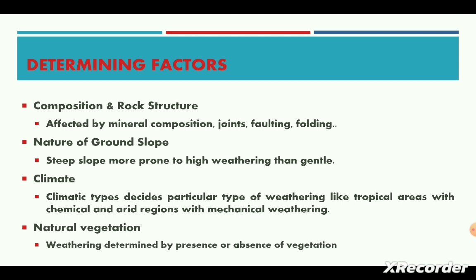The fourth major determining factor of weathering is the floral effect or natural vegetation. The nature of weathering is also determined by the presence or absence of vegetation in a particular region. Vegetation is partly a factor of weathering and at the same time a protector of rocks. In regions with high vegetation, rocks are bound through the network of tree roots and are thus protected from weathering and erosion. At the same time, penetration of roots into rocks weakens and breaks them into several blocks.